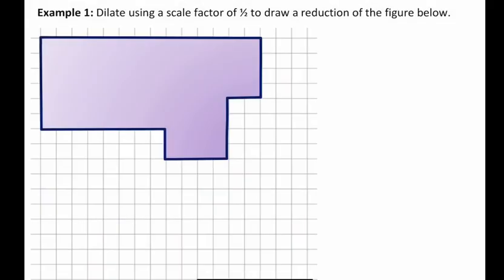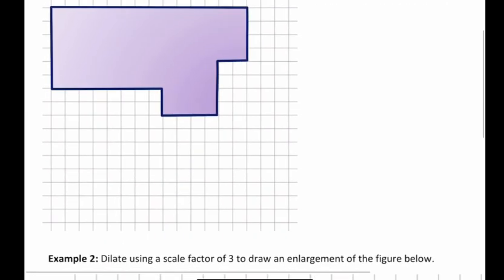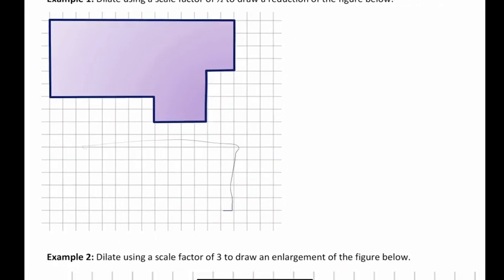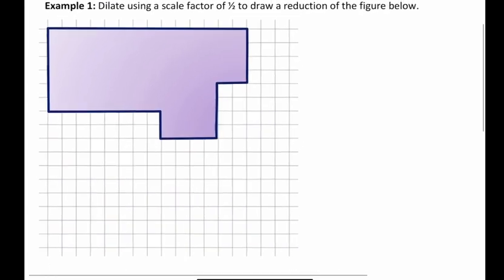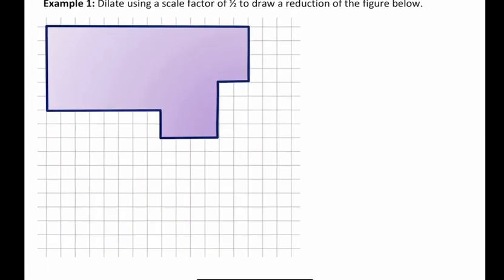The first example says: dilate using a scale factor of one-half to draw a reduction. So we're going to take all the dimensions of that irregular figure and multiply all those dimensions by one-half, or 0.5. The first thing you want to do — and I think a lot of times people just want to start drawing — but that's really the last thing you want to do. First, set up all the dimensions and know what everything is.